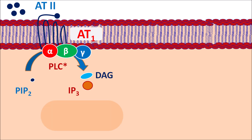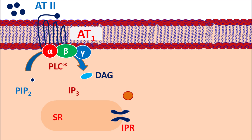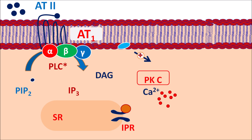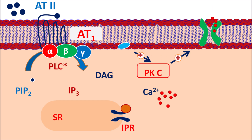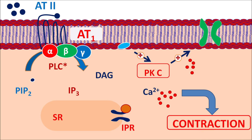IP3 acts on the sarcoplasmic reticulum, which expresses IP3 receptors. By acting on these IP3 receptors, it releases calcium from the sarcoplasmic reticulum, increasing intracellular calcium levels. Similarly, diacylglycerol interacts with phospholipids and activates the protein kinase C system, which stimulates the opening of inward-going calcium channels. More calcium enters the cell, resulting in increased intracellular calcium, which finally causes contraction of vascular smooth muscle.